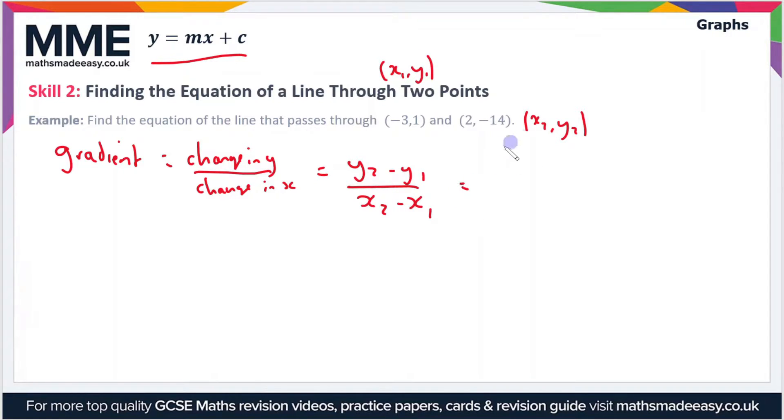So y2 minus y1 becomes negative 14 minus 1 and x2 minus x1 becomes 2 minus minus 3. If you do these sums, negative 14 minus 1 is minus 15. 2 minus minus 3 is 2 plus 3 which is 5. So the gradient is negative 15 divided by 5 which is minus 3.